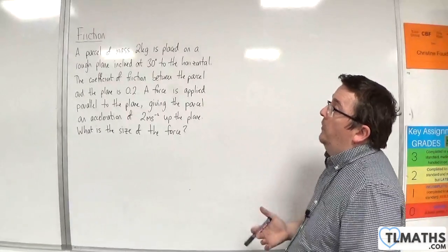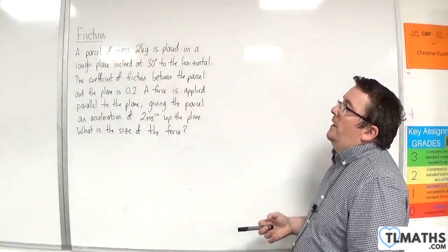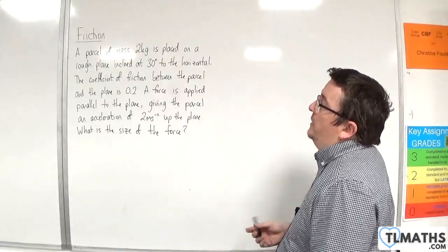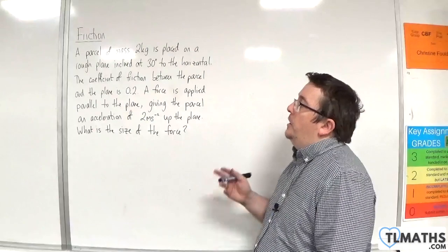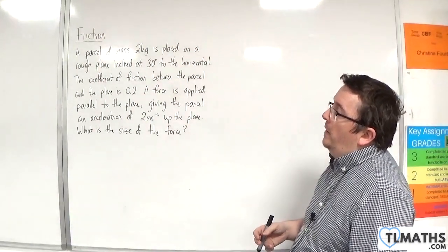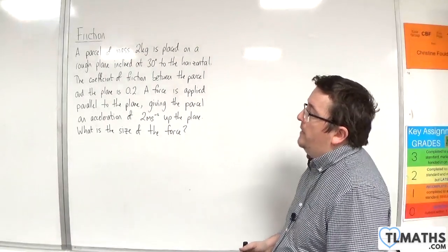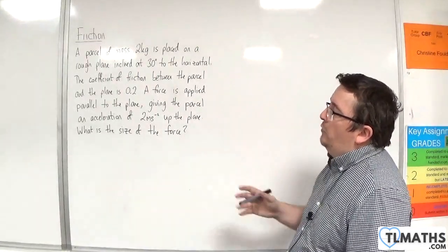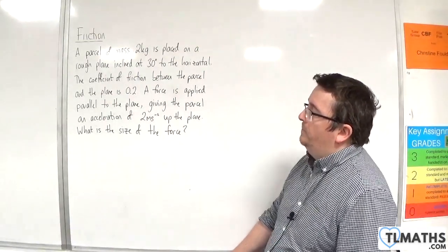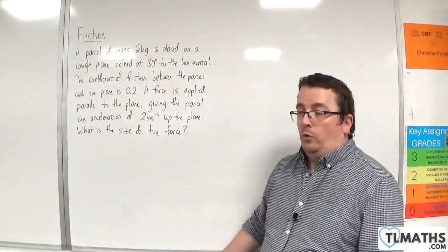In this video, we have a parcel of mass 2 kilos placed on a rough plane inclined at 30 degrees to the horizontal. The coefficient of friction between the parcel and the plane is 0.2. A force is applied parallel to the plane, giving the parcel an acceleration of 2 metres per second squared up the plane. What is the size of the force?